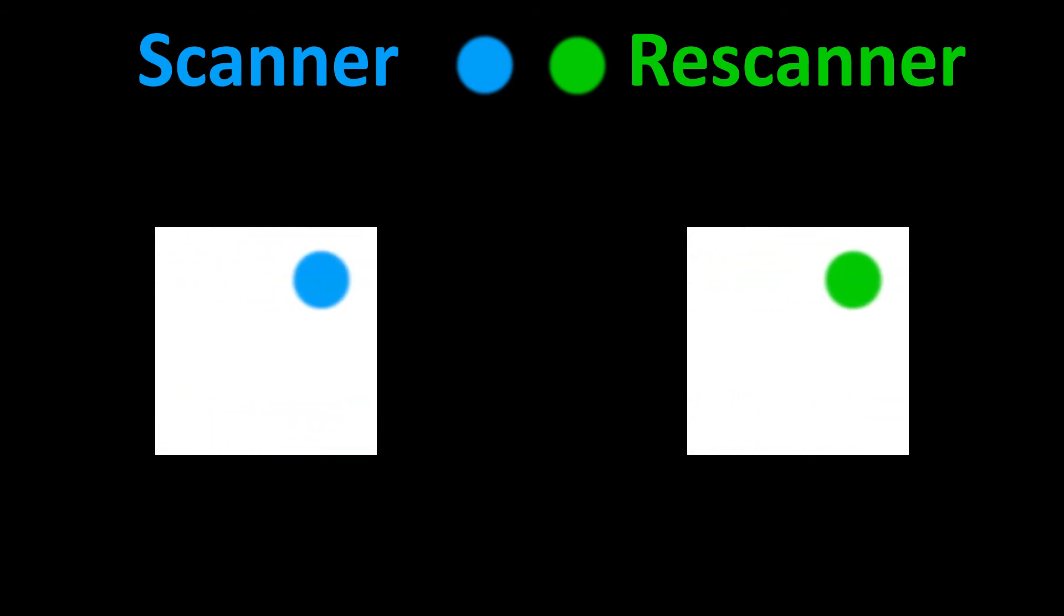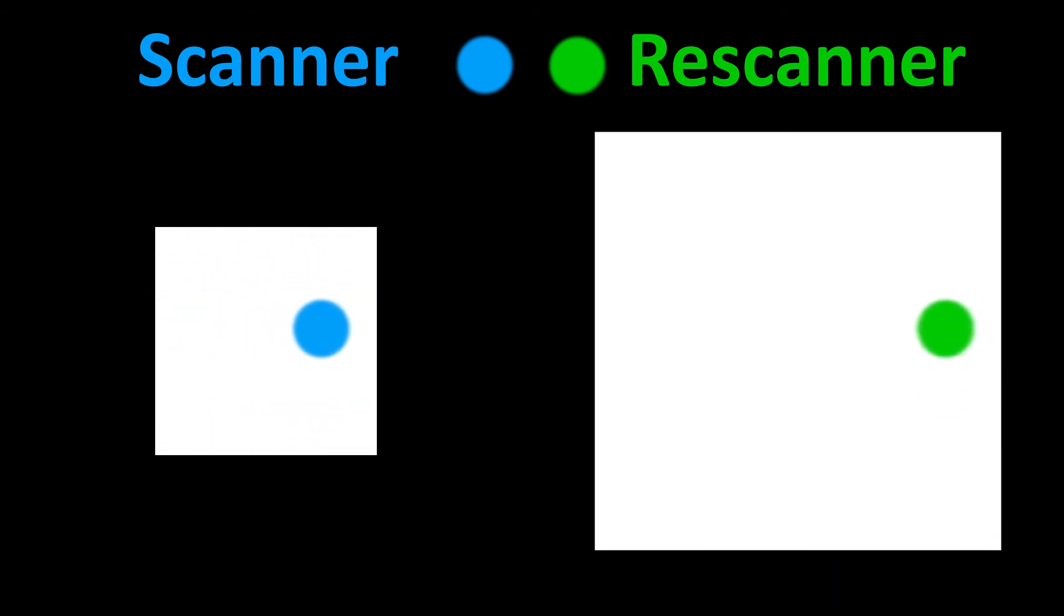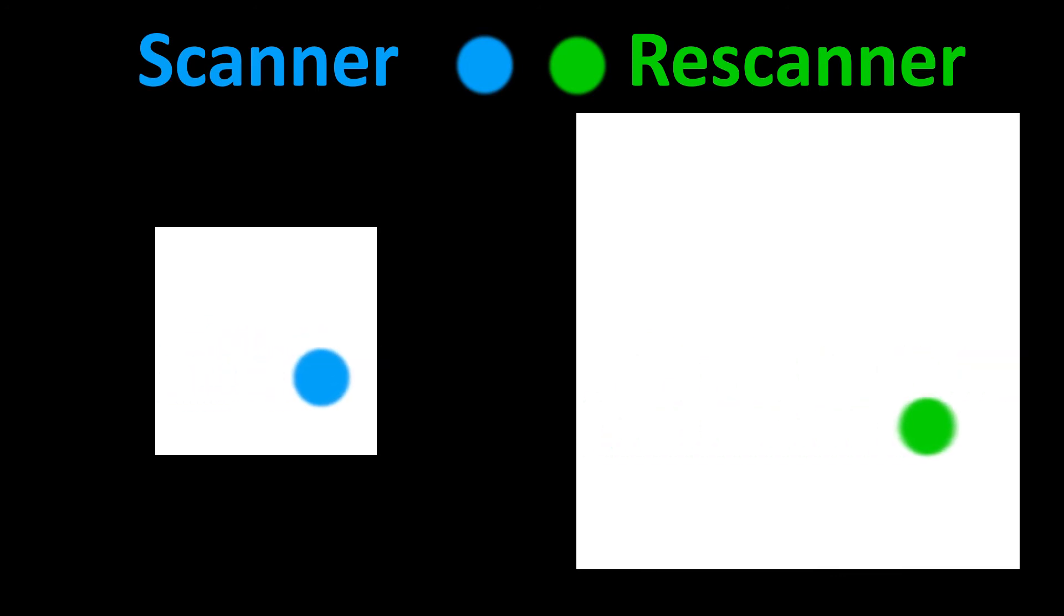Now, watch what happens when we double the sweep of the re-scanner. The size of the re-scan image on the camera chip will double but the size of the re-scanning spot will not increase. However, due to motion blur, the final size of the re-scanning spot will be 1.4 times larger. Because the size of the image is 2 times larger and the blurring function only 1.4 times larger, we will effectively end up with a sharper image.